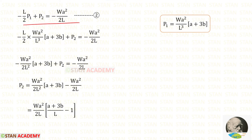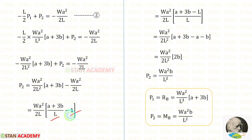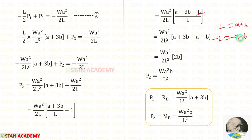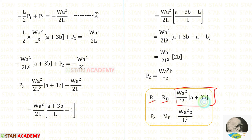In the second equation, substituting the value of P1 and simplifying — cancelling L, taking WA²/(2L) outside, applying LCM, using L = A+B, cancelling terms — we find P2 = MB. We know that P1 = RB = WA²(A+3B)/L³ and the final expressions for RB and MB are now determined.